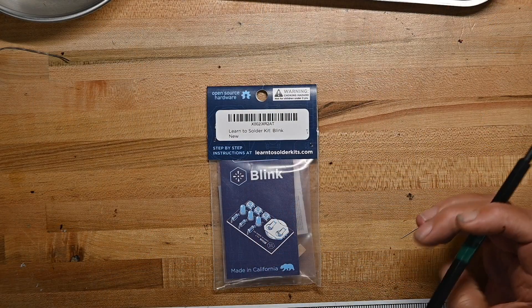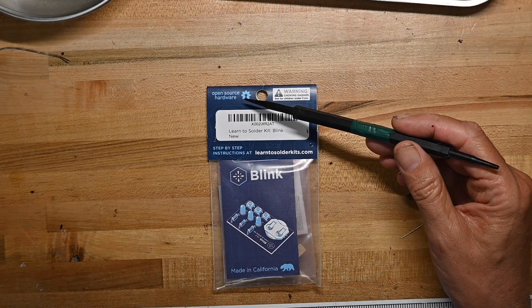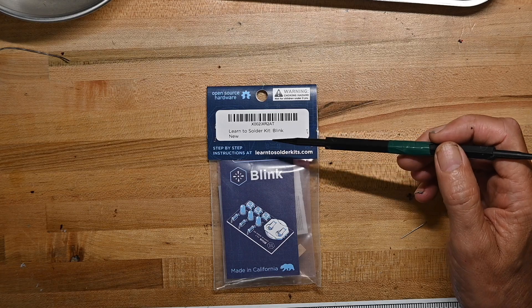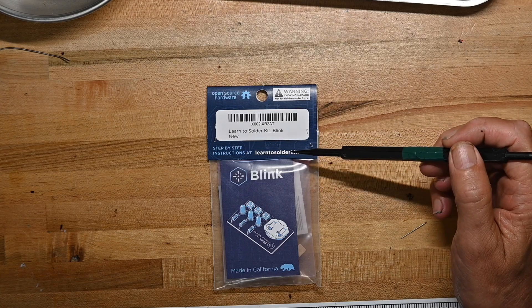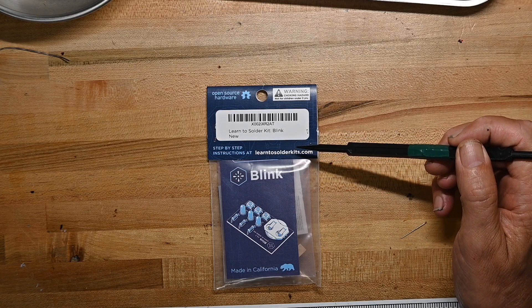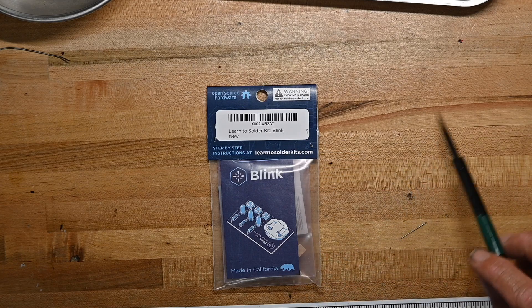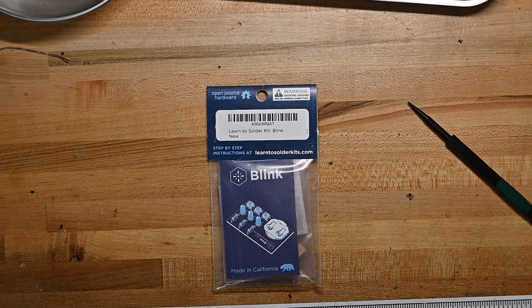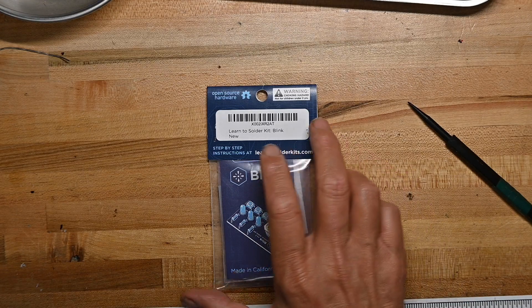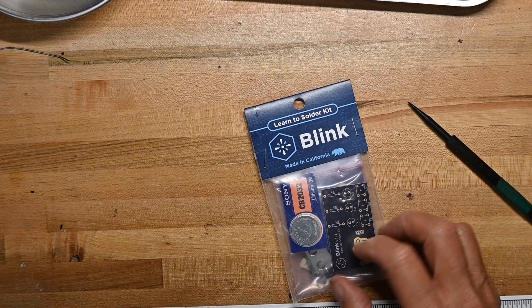So here's the kit from Open Source Hardware, a learn-to-solder kit called Blink with step-by-step instructions at learntosolderkits.com. Made in California, which as a California resident is good. The back says learn-to-solder kit - let's see what's inside.